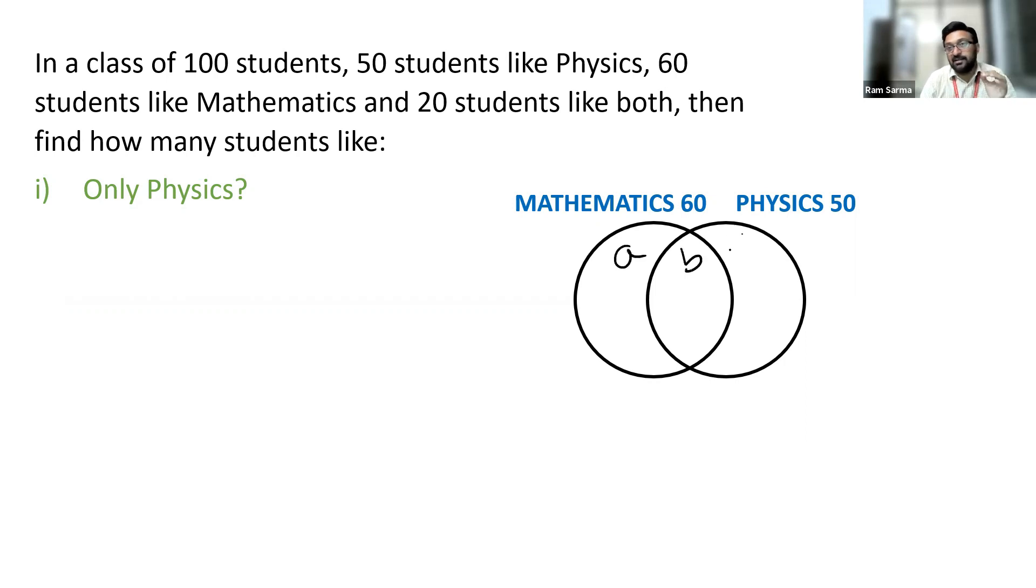A, B and C. Now mathematics is about this circle. So A plus B is math. B plus C is physics. So people who like math is represented by this circle. People who like physics is represented by this circle.